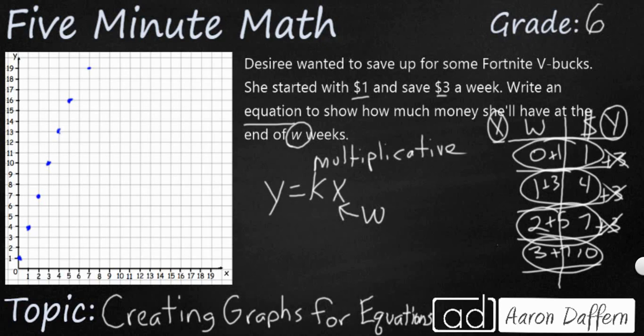Our y here, that's what we're looking for. That is our dependent variable, and that's the money. So our k is going to be our constant. What are we multiplying by our weeks? And that's going to be the $3 a week.